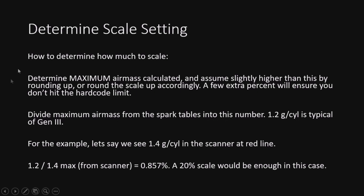How to determine how much you need to scale: determine your maximum air mass calculated from the scanner and assume a slightly higher number — round it up to whatever the easier scale to do is. We're going to divide the maximum air mass from the spark tables into the number we see in the scanner. 1.2 is typical of a Gen 3 for the maximum from the spark table. For this example, let's say we see 1.4 grams per cylinder in the scanner at redline. If we divide 1.2 into 1.4, we're going to need to scale at least 85% — meaning a 20% scale — which is more than enough to get the 1.4 under 1.2.